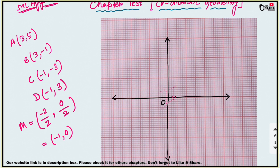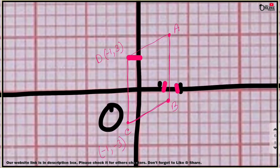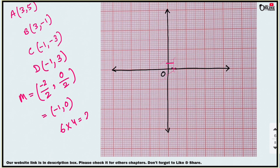Now find the area of the parallelogram using the formula: base × height. The height is 4 units and the base AB is 6 units. So area = 6 × 4 = 24 square units.